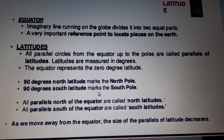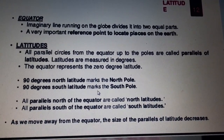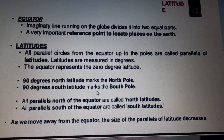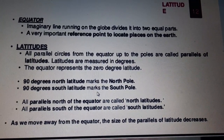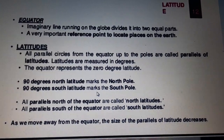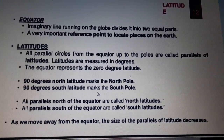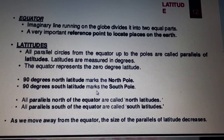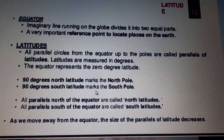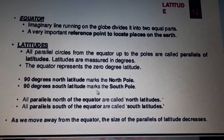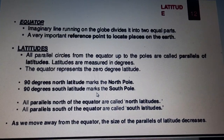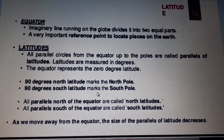All parallel circles from the equator up to the poles are called parallels of latitude. All the lines running through the latitudes are parallel and are measured in degrees. The equator represents zero degree latitude. Ninety degrees north latitude marks the north pole and ninety degrees south latitude marks the south pole — written as 90° N and 90° S. All parallels north of the equator are called north latitude and all parallels south are called south latitude. As we move away from the equator, the size of the parallel of latitude decreases.